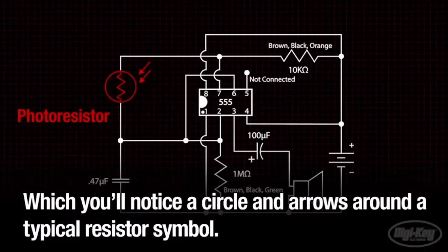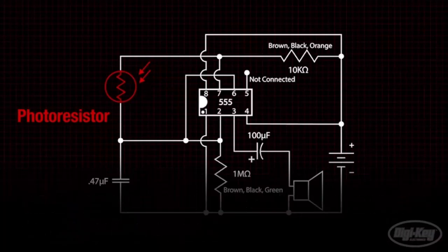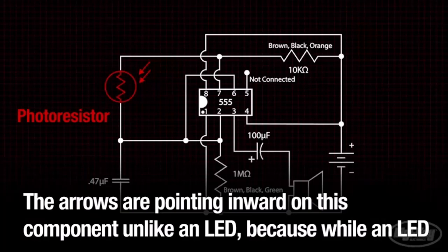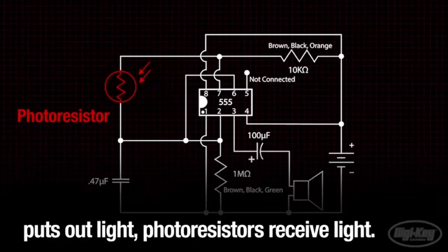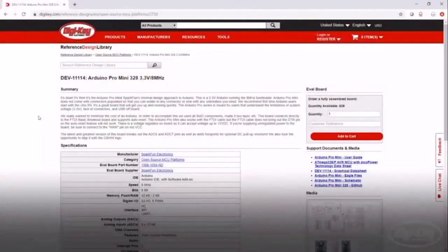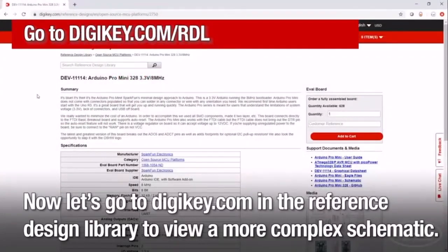has a circle and arrows around a typical resistor symbol. The arrows are pointing inward on this component unlike an LED, because while an LED puts out light, photo resistors receive light. Now let's go to digikey.com in the reference design library to view a larger more complex schematic.